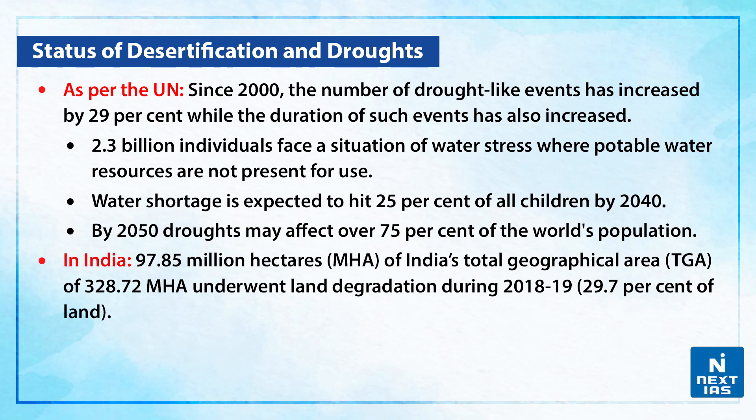Specific to India, 97.85 million hectares of India's total geographical area — that is 328.72 million hectares — underwent land degradation during the year 2018–19, which is nearly 29.7% of the land.